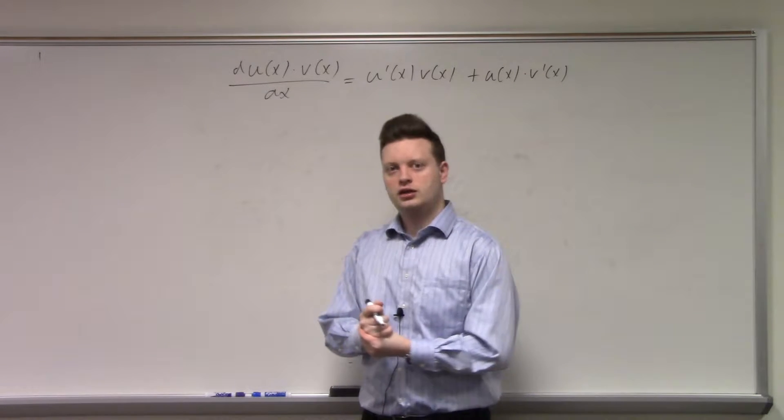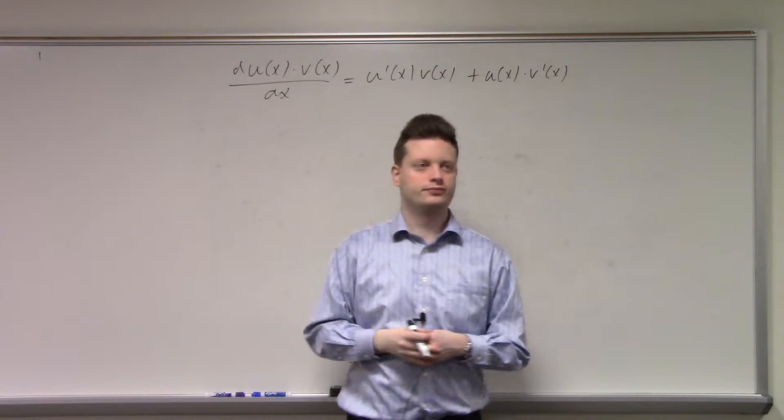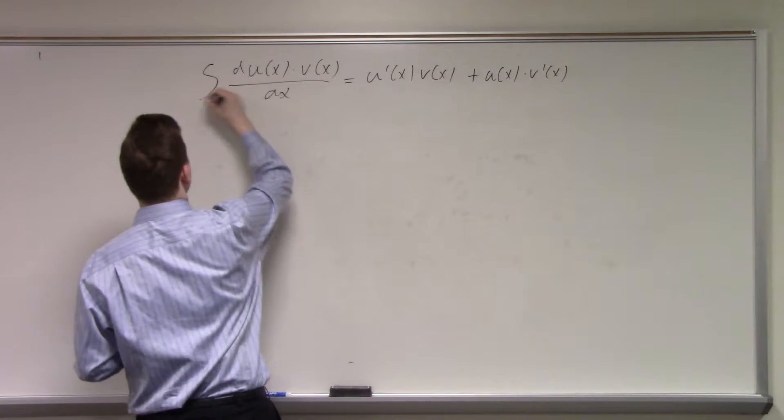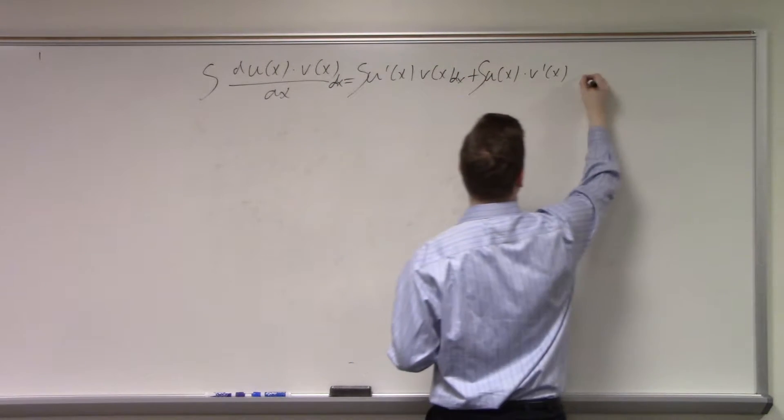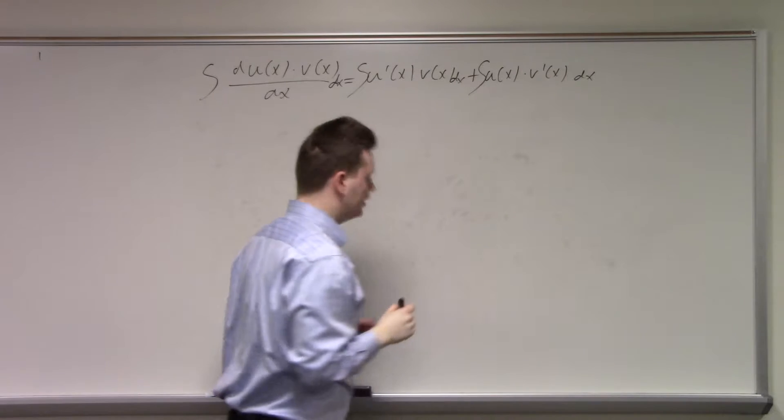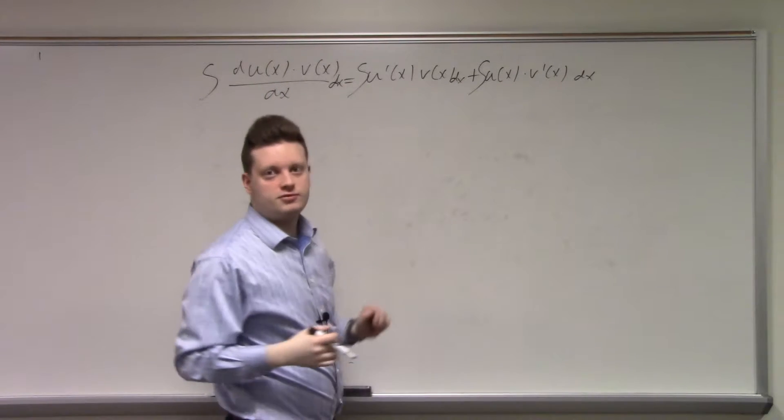For integration by parts, we can just integrate both sides. Let's do that. The left-hand side is obviously just u(x) times v(x).